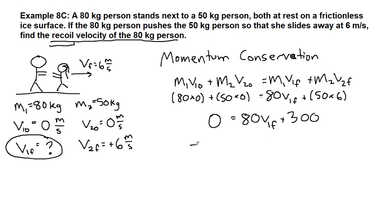If we subtract 300 from both sides, and then divide both sides by 80, then we get the final velocity of the 80 kilogram person is negative 3.75 meters per second.